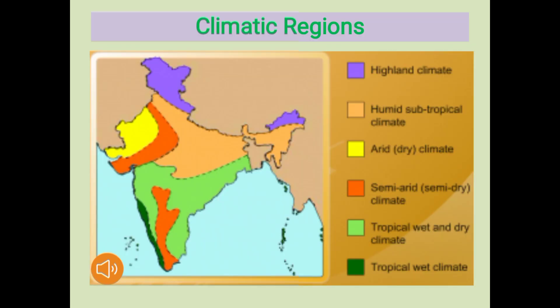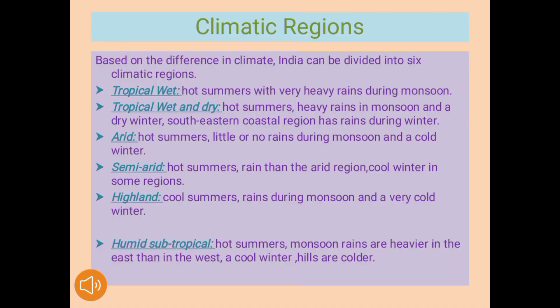Now let us learn about the climatic regions of India. You can see the map, which shows several colors representing different climatic regions. The purple color is highland climate. The deep yellow, or yellow ochre, is the humid subtropical climate. The red color is the semi-arid or semi-dry climate. The lemon yellow is arid or dry climate. The light green is tropical wet and dry climate, and the dark green is tropical wet climate. So we can see six types of climatic regions in India, and based on differences in climate, India is divided into these six climatic regions.